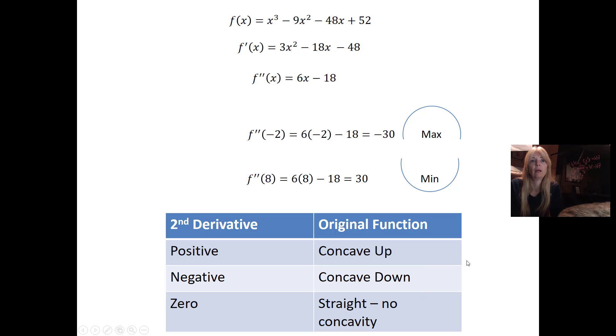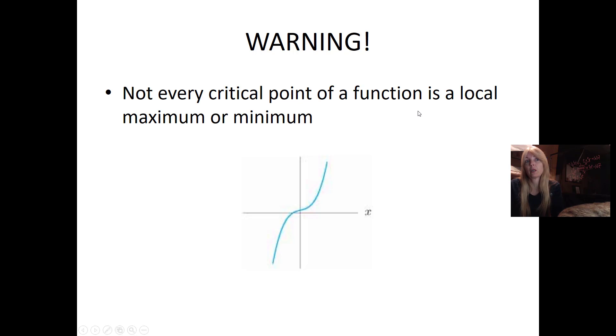Remember if we get zero, it's straight, no concavity. And the straight, no concavity, you got to be very careful. Not every critical point of a function is a local max or min. Notice here this function increases, it hits zero, but then it goes back increasing. This is a critical point here but it's not a local max or min.